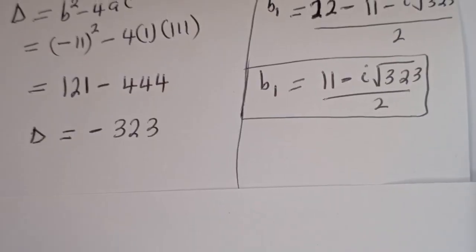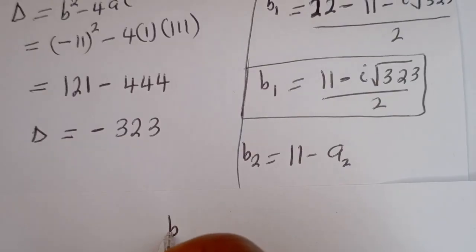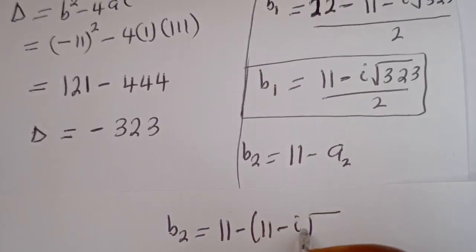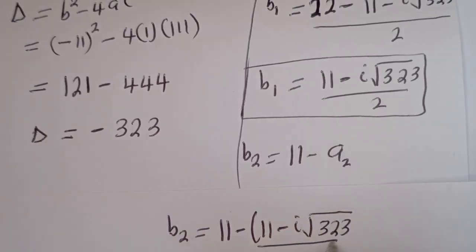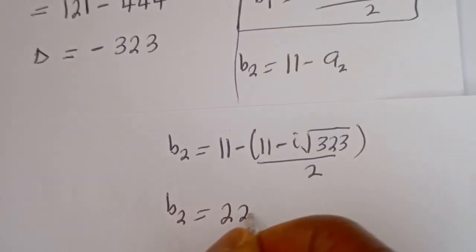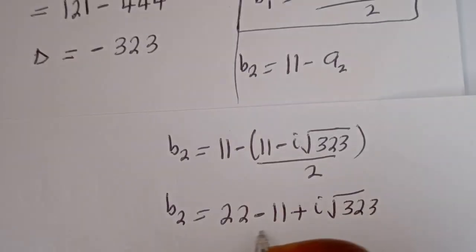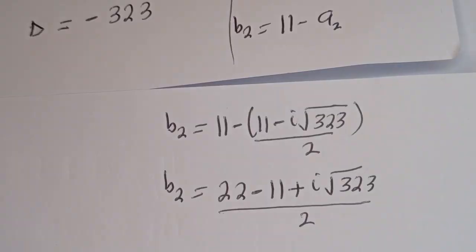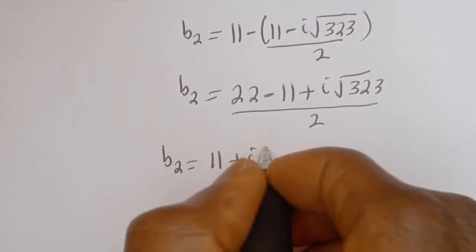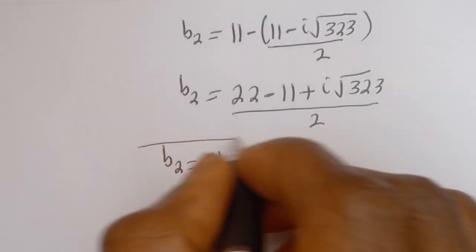Let's solve for B2. B2 equals 11 minus A2, which is 11 minus (11 minus i√323) over 2. This gives (22 minus 11 plus i√323) over 2, so B2 equals (11 plus i√323) over 2. This is the value of B2.